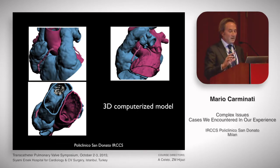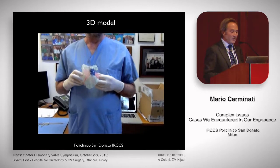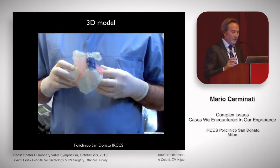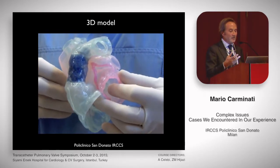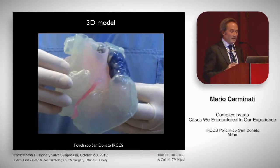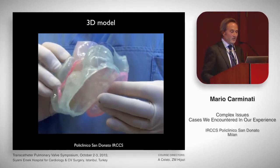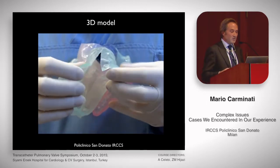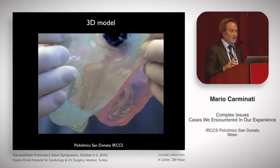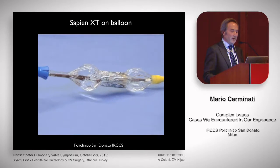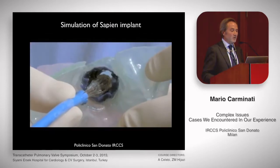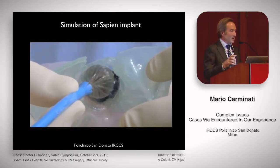Then the CT data with the 3D computerized model. Based upon this 3D CT model reconstruction, we printed a 3D model of this patient. This is the 3D model in different colors: you see the CP stent in blue, the left heart structures in red or pink, and the white in the right heart structures. And we simulated the implantation of the valve inside the conduit.